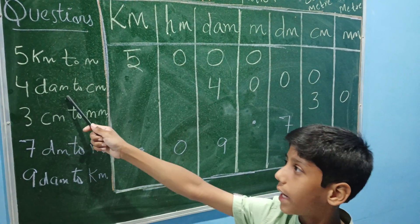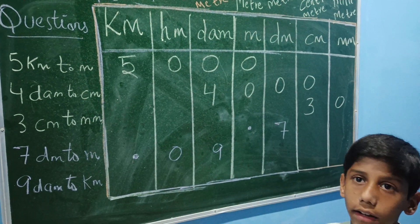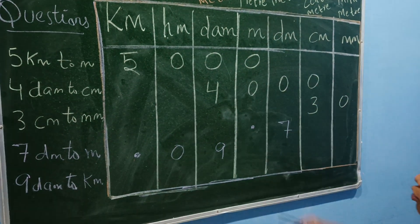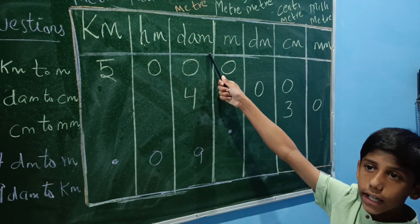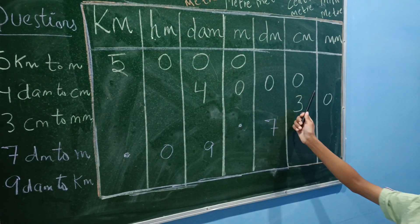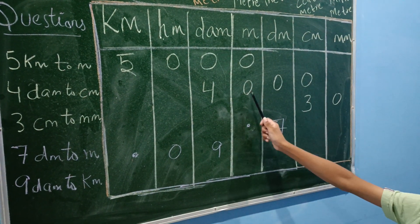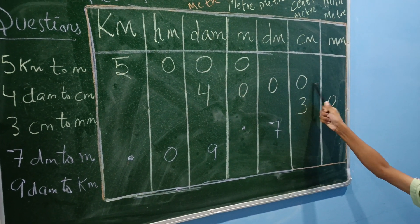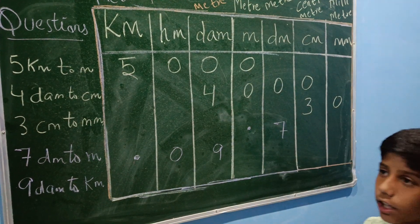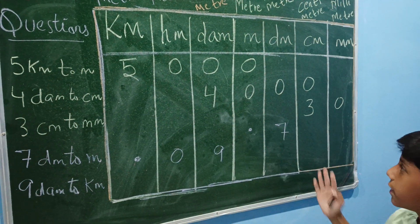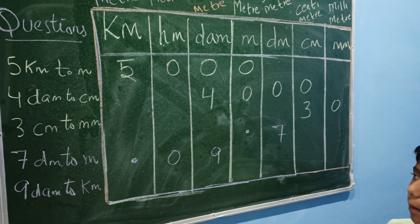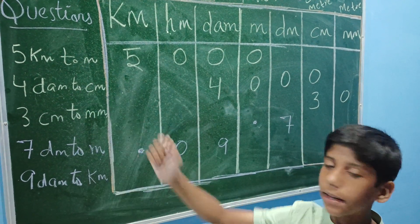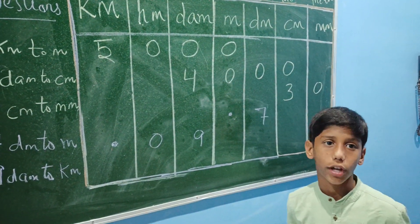Next: 4 decimeter to centimeter. Now we have to convert 4 decimeter to centimeter. So we will write 4 in decimeter and move to the right side, multiplying by 10. So 4 decimeter to centimeter equals 40.